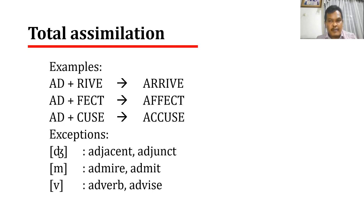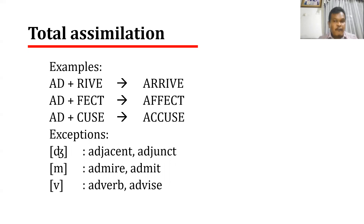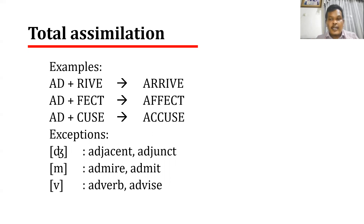However, this rule is not applicable when the word that comes after is initialized by J, M, or V. So the rule is not applicable when prefix 'ad-' is followed by those three consonants. We can find in English words such as 'adjacent', 'adjunct', 'admire', 'admit', 'adverb', and 'advise'. So 'ad-' is assimilated whenever it is followed by a consonant except J, M, and V.